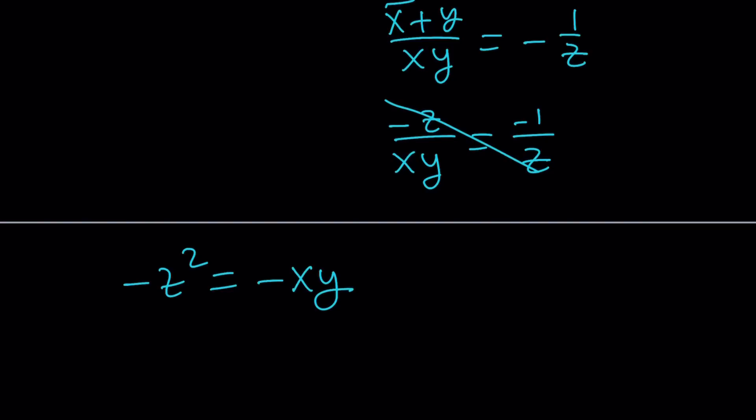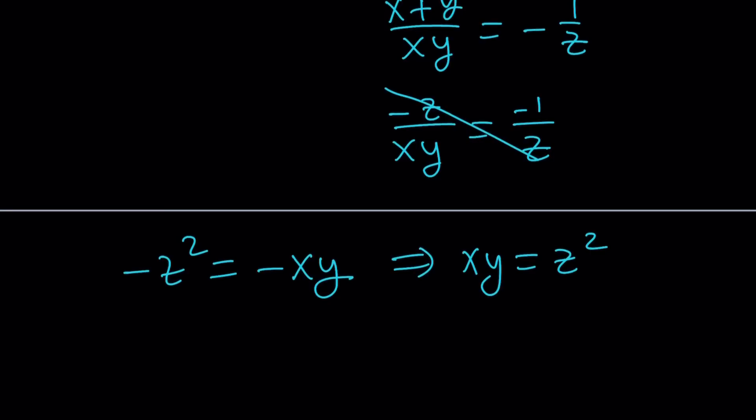Negative Z squared equals negative XY. Now, how does that help me, right? Well, here's the thing. I can kind of come up with an equation. So from here, I get XY equals Z squared and X plus Y equals negative Z. So here's what I'm going to do.